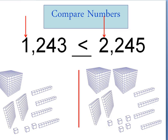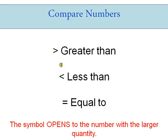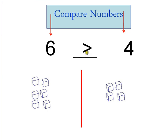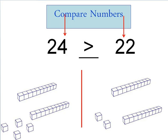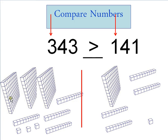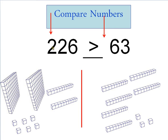When comparing numbers, I always use these three symbols, and the symbol opens up to the number that is the larger quantity — think of it as an alligator trying to eat the bigger number. When we have tens and ones, we start with the larger place value, the tens. When we have hundreds, we start there. And if one number has hundreds and the other doesn't — or if one has thousands and the other doesn't — that one is always going to be the larger quantity.